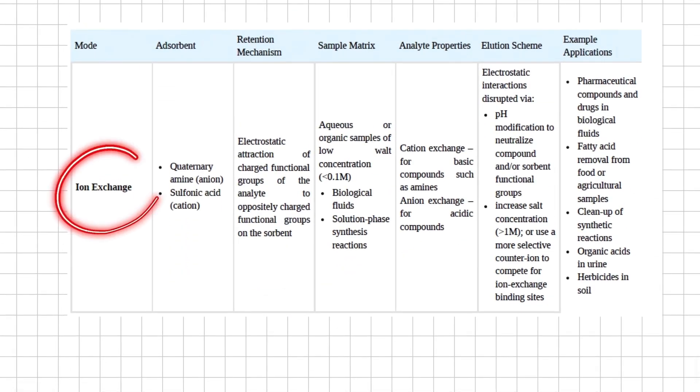In this diagram, the ion exchange mode has been explained. Most commonly we are using quaternary amine as anions, and sulfonic acids as cation adsorbents. The mechanism of retention is electrostatic attraction between the two species. The sample matrices are aqueous or organic samples of low molar concentrations. The analyte properties should be that they have some ions. The next column explains the elution schemes, whereas the examples in which we are using ion exchange solid phase extraction include pharmaceutical compounds, fatty acid removal, synthetic reactions, organic acids, etc.